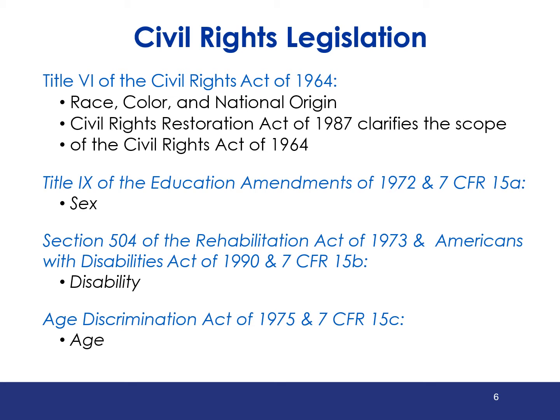Title VI of the Civil Rights Act of 1964 prohibits discrimination based on race, color, and national origin in programs and activities receiving federal financial assistance. The Civil Rights Restoration Act of 1987 clarified the intent of Congress as it relates to the scope of Title VI. All recipients of federal funds must comply with civil rights laws in all areas, not just the program or activity that receives funds.